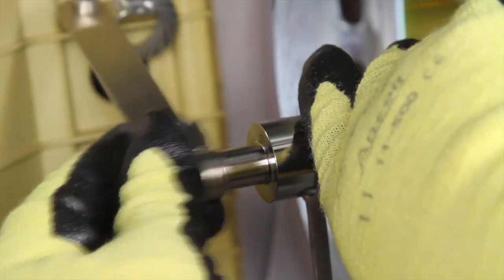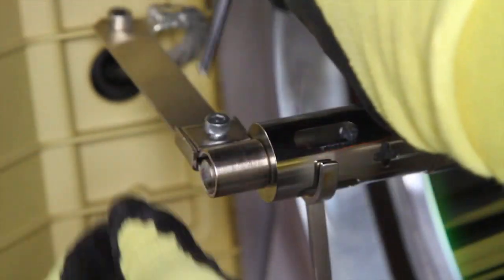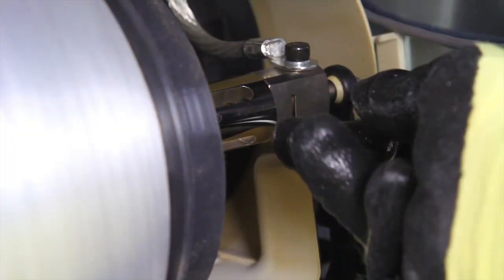Place the anode clamp over the ferrule and tighten. Tighten the cathode clamp.